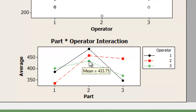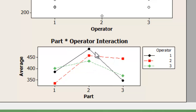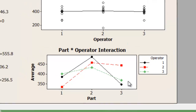Part number 2 as measured by Operator 3 is 433. The mean of measurement by Operator 2 is 457, and by Operator 1 it is 487 — very, very far apart. As I said, had there been little or no measurement error they would have been very, very close to each other. This is unacceptable.